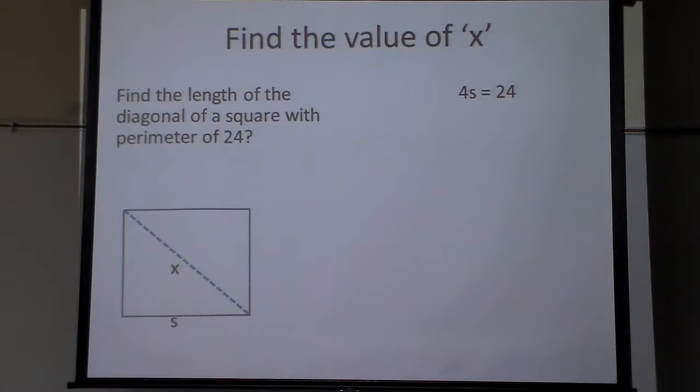24. Let's let that be s. So we know this. There's four sides: 1, 2, 3, 4, all the way around. 4s is 24, so that means each side is what? 6. So that means those two sides are 6.